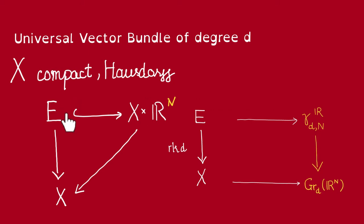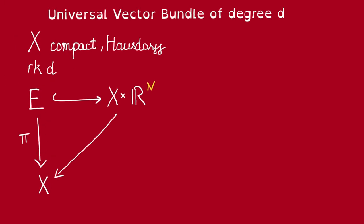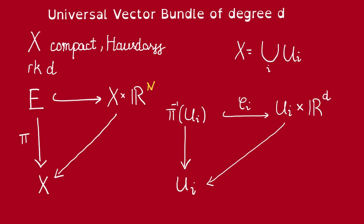let us first explain how we get this bundle embedding. Let's say that E is the vector bundle of rank d, then X must have an open cover U_i, such that the fiber of E over every U_i is just going to be isomorphic to U_i times R^d. These are the local trivializations of this vector bundle.